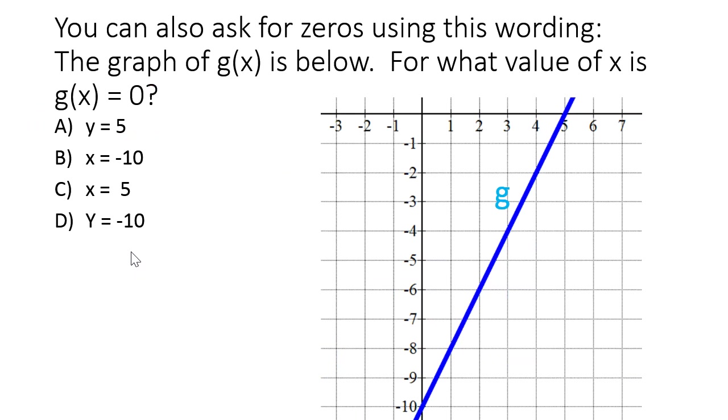You can also ask for the 0s using this wording. The graph, this is important. It's a totally different problem. The graph of g of x is shown below. For what value of x is g of x equal to 0? Notice how they say that. G of x is equal to 0.